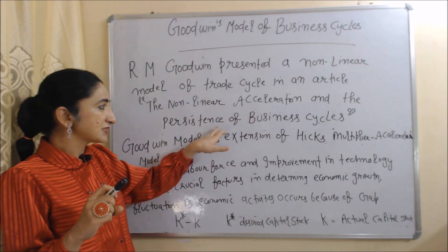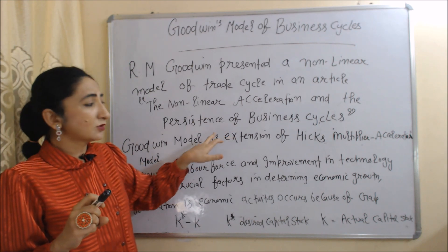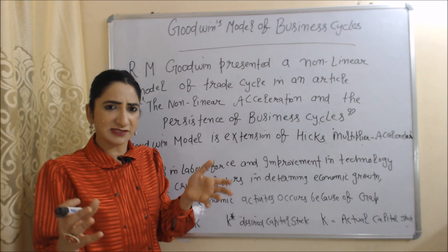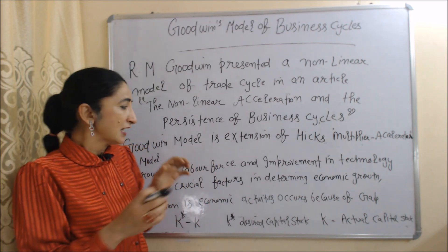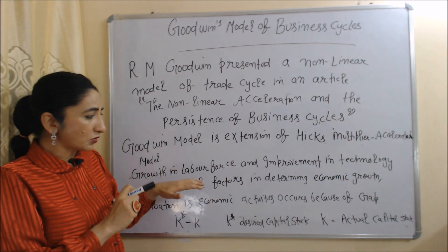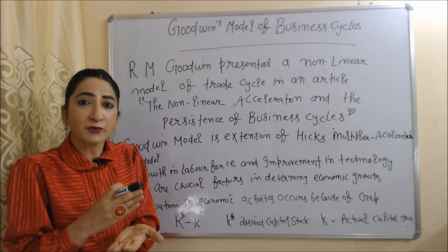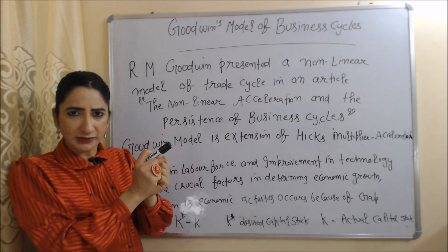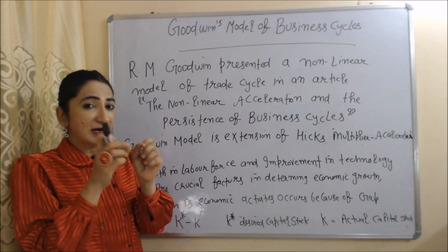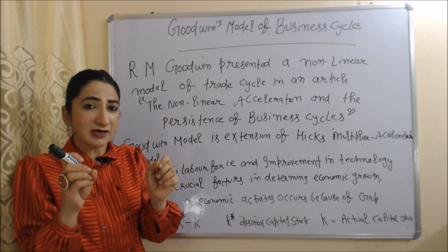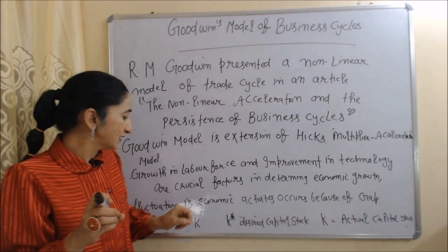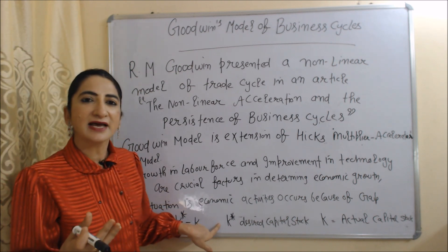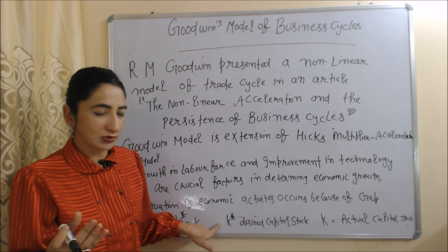The article is titled 'Non-linear Acceleration and Persistence of Business Cycle.' Goodwin's model is an extension of Hicks' multiplier and accelerator model. According to this model, growth in labor force and improvement in technology are crucial factors in determining economic growth. Fluctuation in economic growth occurs because of the gap between K* and K — K* means desired capital stock and K means actual capital stock.